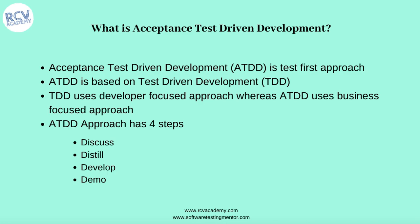The acceptance test driven development approach has four key steps: the first step is Discuss, second is Distill, then Develop, and Demo. These are the key steps in the ATDD lifecycle — you first discuss within the team, then distill the criteria, then develop and demo.